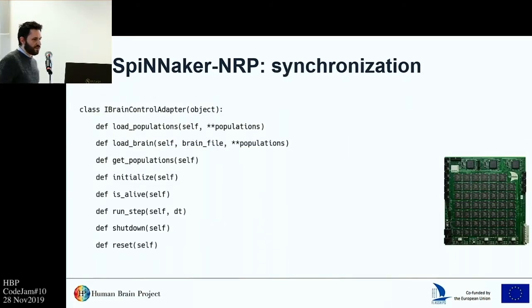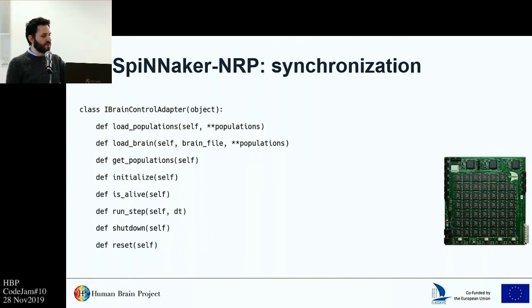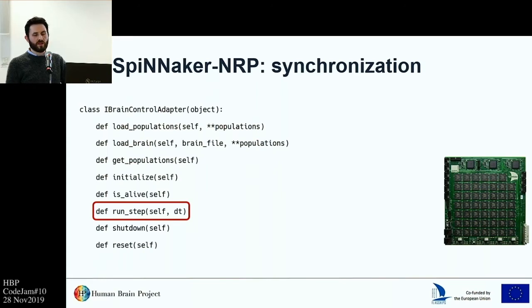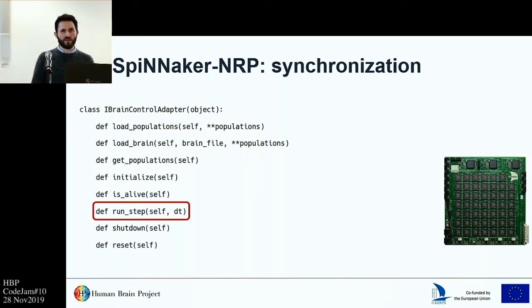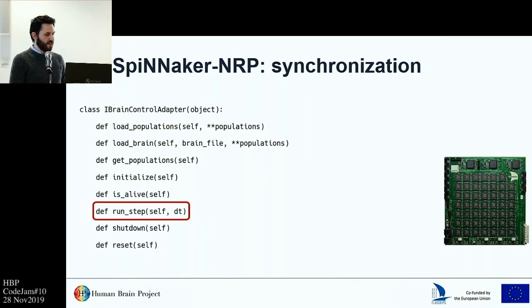Regarding synchronization, we implemented the brain control adapter interface, which among other things has the job of loading the brain, loading the populations to which you can attach the transfer function, and initializing everything. Most importantly, it has a run step method. This run step method tells the neural simulation to perform a synchronized step — to advance the simulation time and run all the neural dynamics. This is what the closed-loop engine uses to advance the simulation on the neural side.